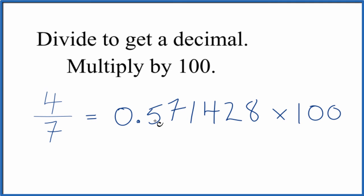Multiplying by 100 will change our decimal to a percent. We end up with 57.14, and we'll leave it there. So we rounded this a little bit—57.14 percent.